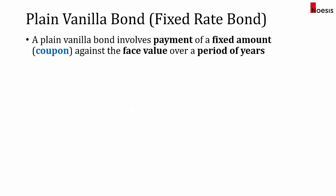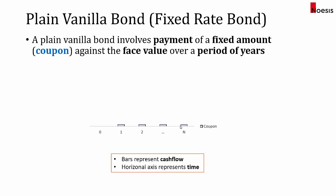For the first type, it's a plain vanilla bond that pays fixed coupons, or fixed amounts. This fixed coupon is calculated against the face value over a period of years. Looking at this timeline, the bars represent the cash flows, and the horizontal axis represents time. You will see that the bars have the same height, which means that the coupon is a fixed amount.